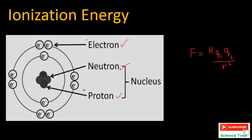The force present between electrons and protons is given by k times q1 times q2 over r squared, where k is the constant, q represents the charges of electrons or protons, and r is the distance or radius between the protons and electrons. When this force is applied on an atom, electrons and protons come closer to each other.